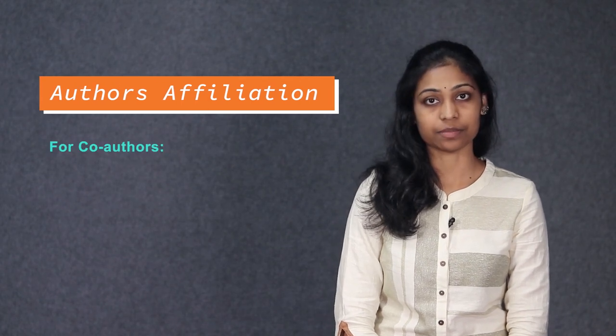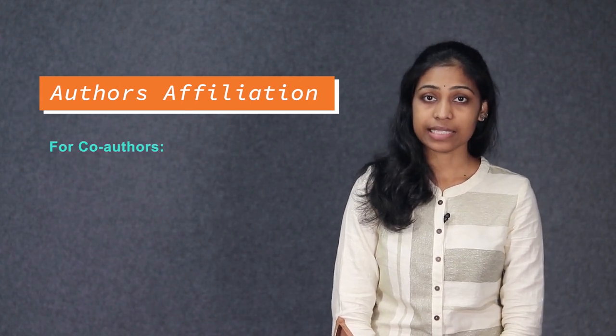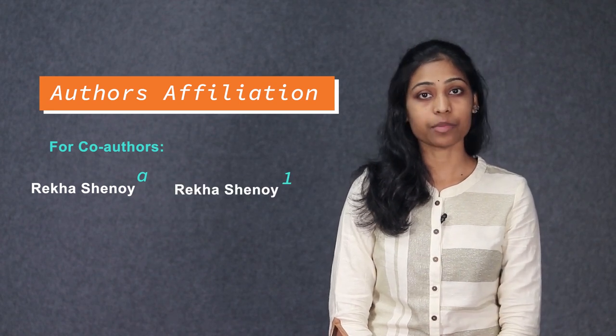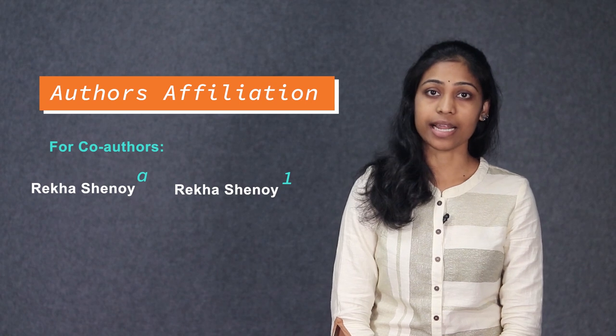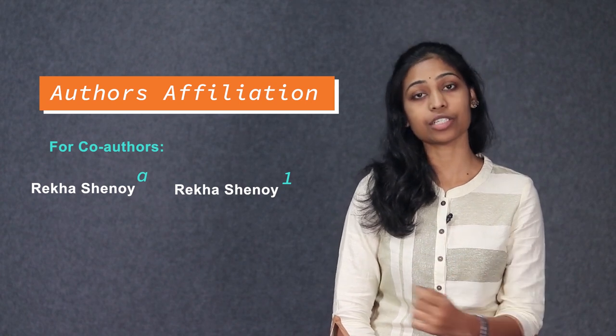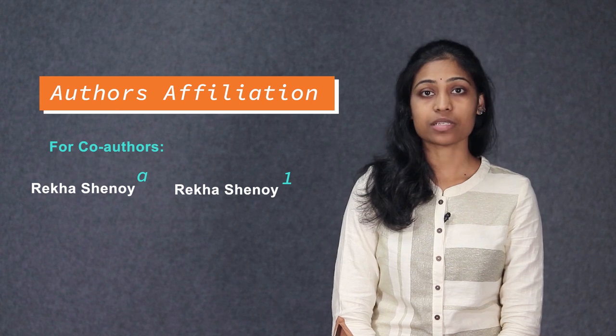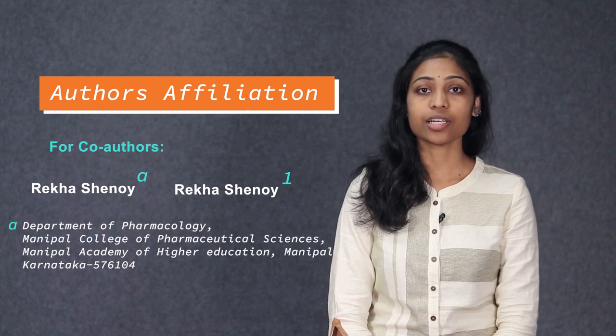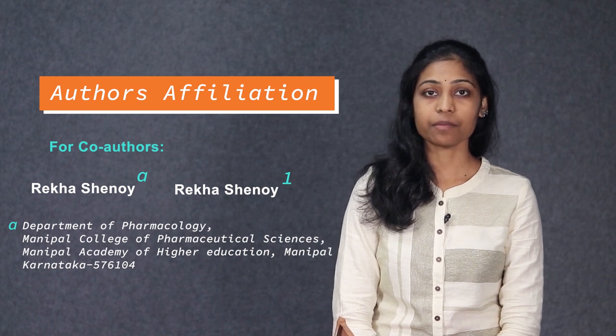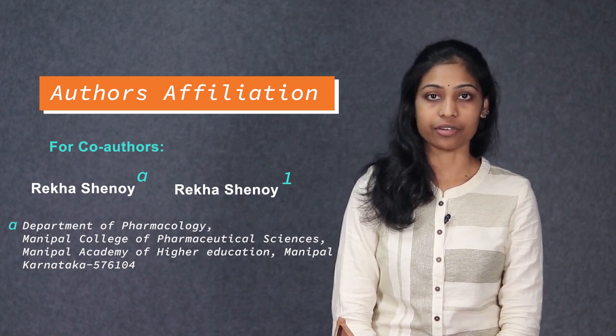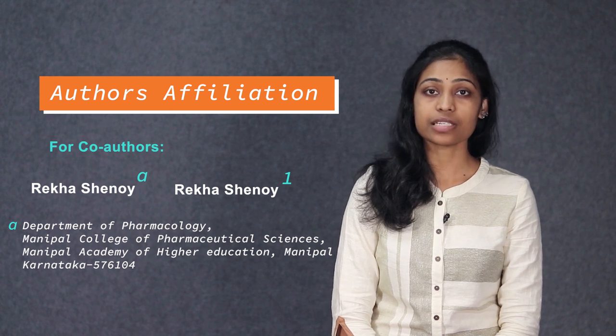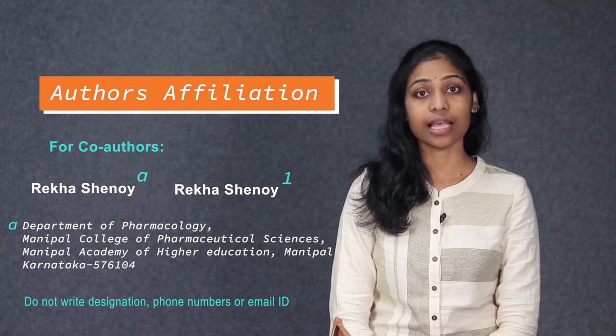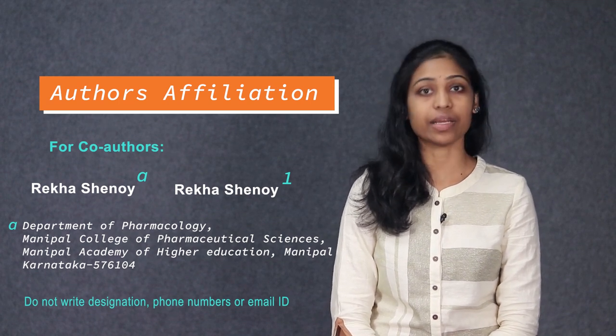Author's Affiliations. Each author's name is followed by a lowercase superscript letter or a superscript number as per the abstract guidelines to indicate their respective affiliation. The same superscript is used in front of the affiliation. In the affiliation, write the name of the department, institute and full postal address. While writing the first and co-authors affiliation, do not mention the designation of the authors, their phone numbers or their email IDs.